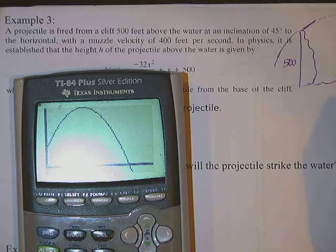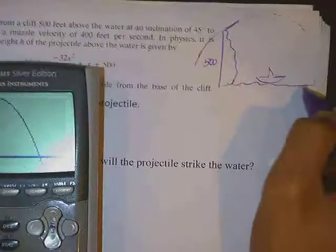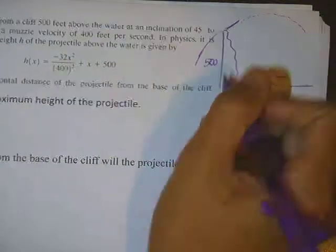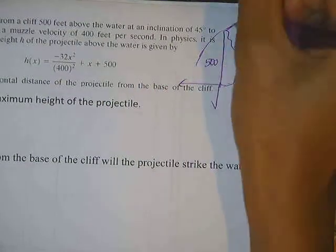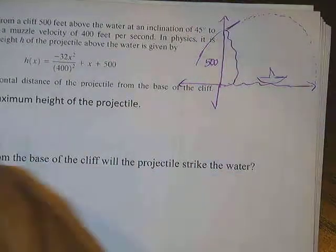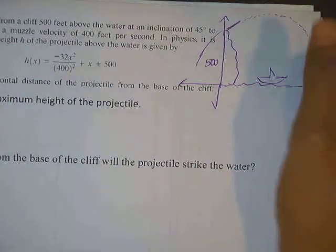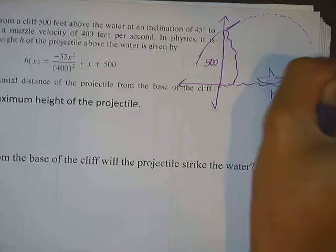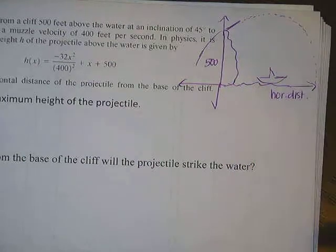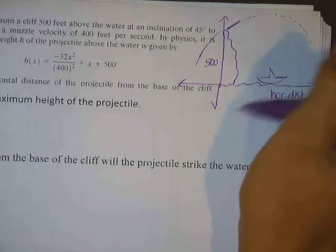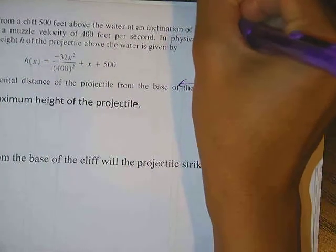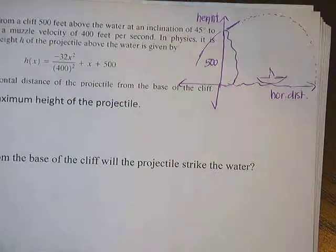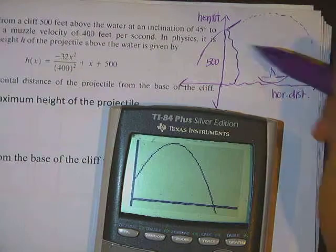So label our x-axis, right? So this is a sketch. Here's my x-axis and here's my y-axis. X-axis is the horizontal distance, so horizontal distance. The y-axis, h(x), is how high it is. So this is the height. All right, so that's what it looks like. So now find the maximum height of the projectile.